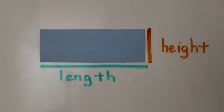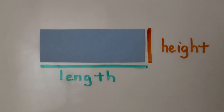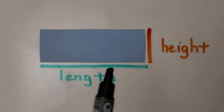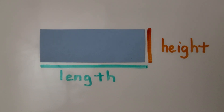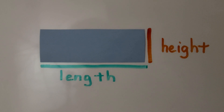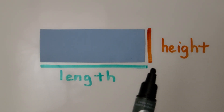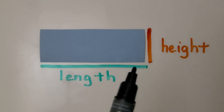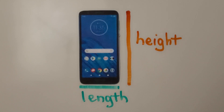Here we have a rectangle. Length is how long an object is from side to side, and it's shown with a horizontal line that goes across. Height is how tall it is from bottom to top, shown with a vertical line. The orange line shows the rectangle's height, and the green line shows the rectangle's length from side to side.